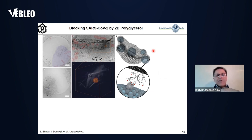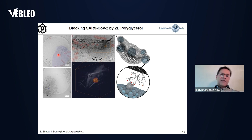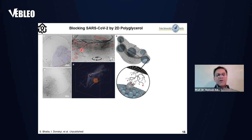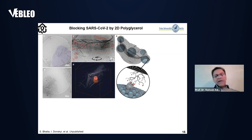Inspired by our previous projects, we wanted to use this two-dimensional polyol for virus interactions. This is a cryo-TEM image showing the interaction of this two-dimensional polyol, highlighted in blue, with influenza viruses, highlighted in red. You can clearly see that the two-dimensional polyol is wrapped around the influenza viruses, and in this tomogram image you can see that the virus is inside the two-dimensional polyol net. Therefore, we know there is a strong affinity between viruses and such two-dimensional polyols.